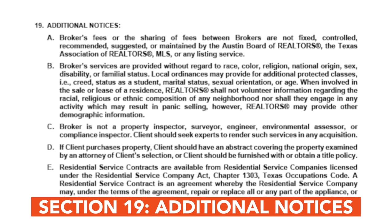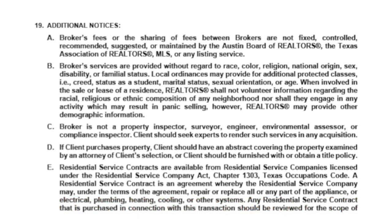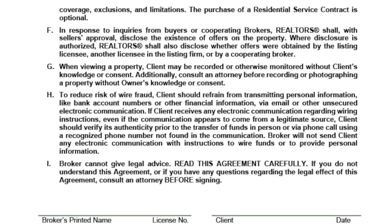The nineteenth section is Additional Notices. Read over these and ask your broker any questions. Issues covered include the negotiability of broker fees, fair housing, inspections, the need for an abstract and title policy, the use of residential service contracts, how offers are disclosed, the use of recording devices at properties, care to avoid wire fraud, and limitations around legal advice.